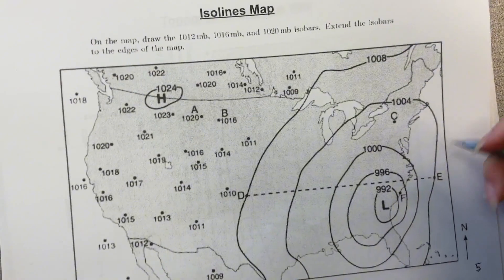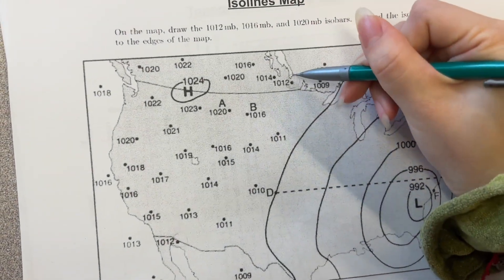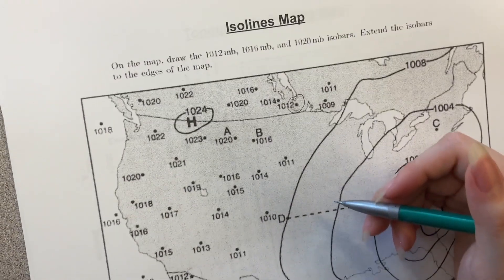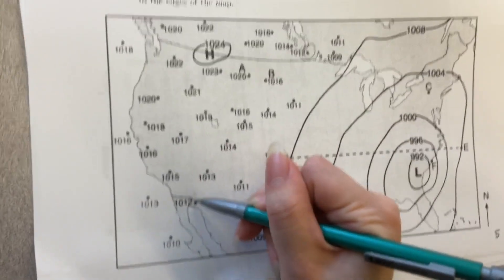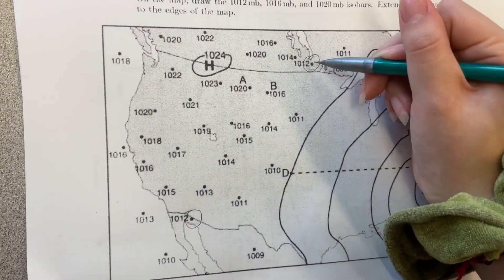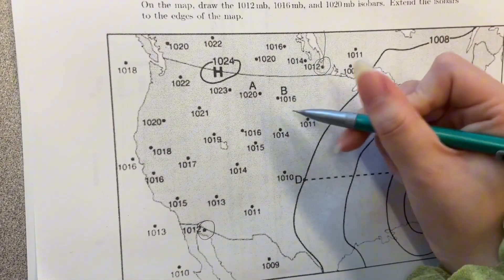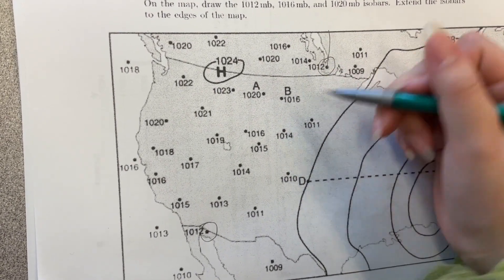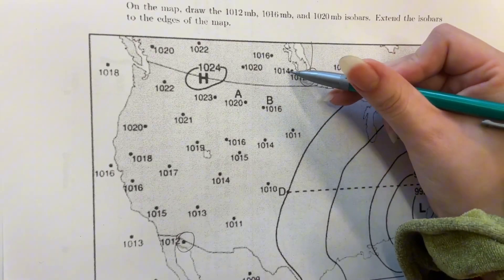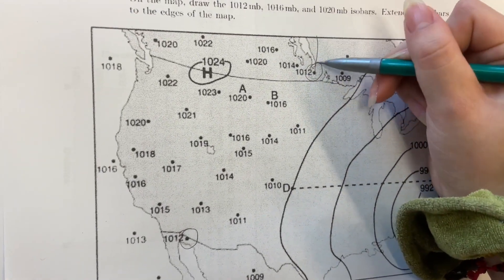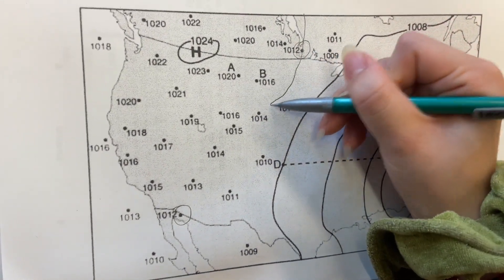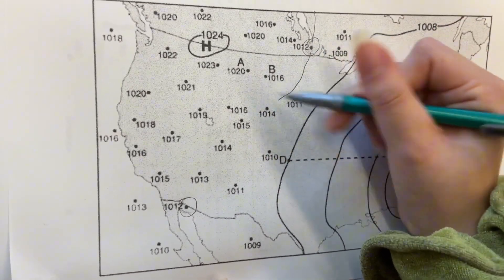So to begin, for the 1012 MB, you have to find what 1012s are on the map. So there's one right here and then there's one right here. To connect these two, you have to move your lines in between the points that have 1012 between them. So for this one that I did, 1012 is between 1014 and 1011, so you can draw a line between them.